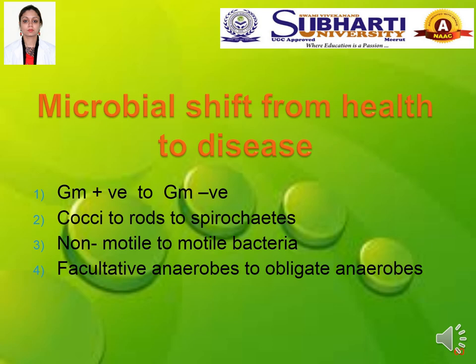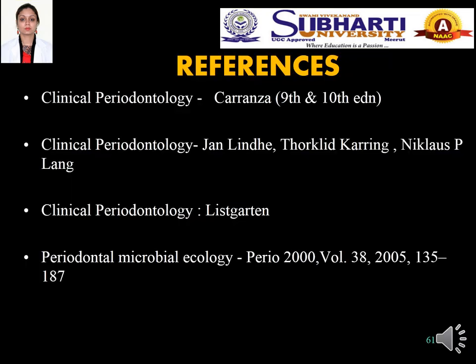Regarding the microbial shift from health to disease: as gingival health shifts from healthy condition to gingivitis or periodontitis, gram-positive microorganisms become predominated by gram-negative organisms; cocci decrease and the population changes to rods and then to spirochetes; non-motile bacteria decrease in number and motile bacteria predominate; and facultative anaerobes reduce as the environment becomes deprived of oxygen, with obligate anaerobes becoming predominant. These are the references for further reading — the textbooks of Carranza, Lindhe and other related books.